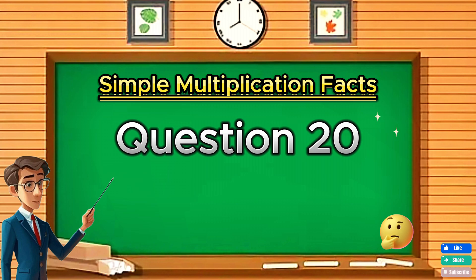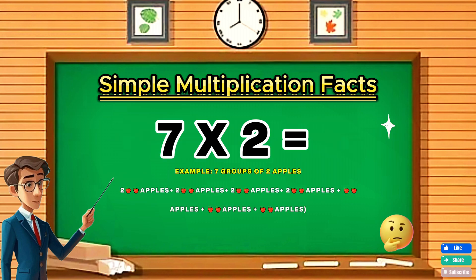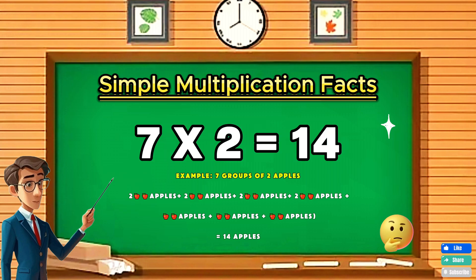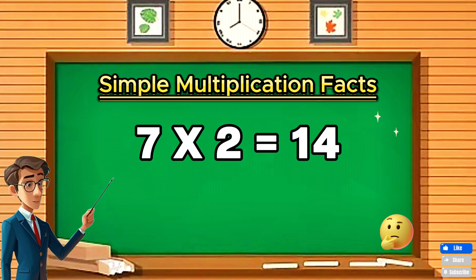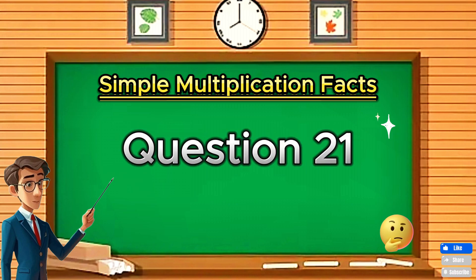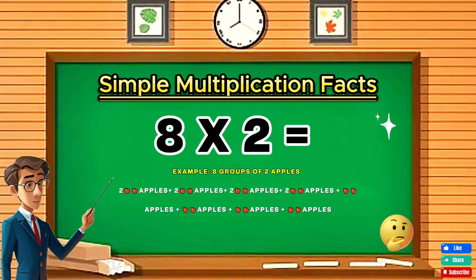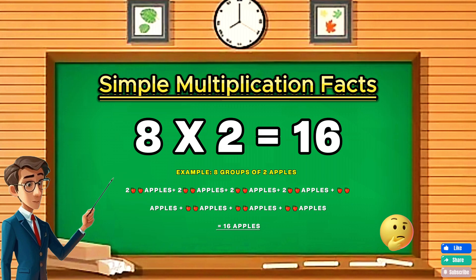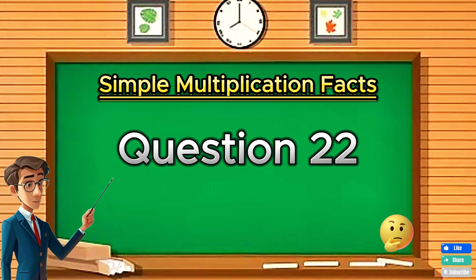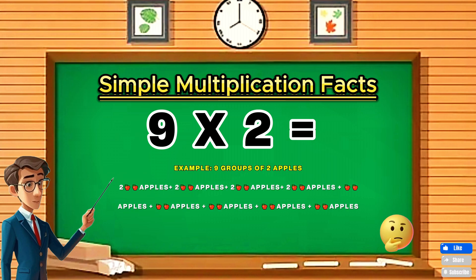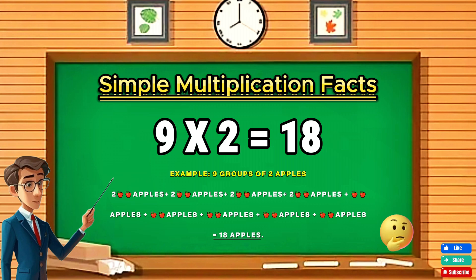Question twenty: Seven times two equals? Question twenty-one: Eight times two equals? Question twenty-two: Nine times two equals eighteen.